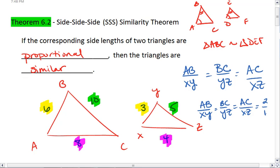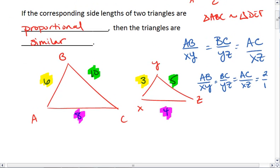This means all sides are proportional, which tells you that the triangles are similar. Triangle ABC is similar to triangle XYZ.